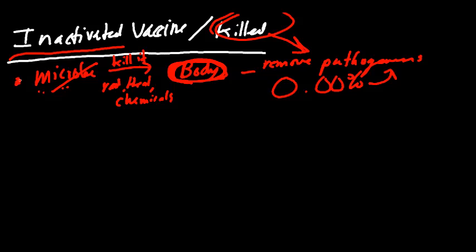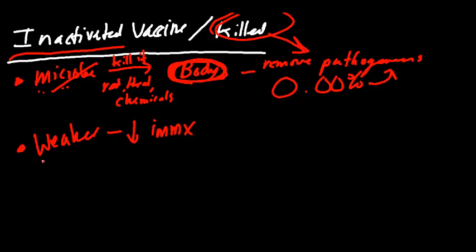So why wouldn't we give inactivated vaccines more often? It's because they're weaker — that's one of the disadvantages of an inactivated vaccine. They cause a decreased immune response compared to the live attenuated. Their weaker response doesn't stimulate the immune system as much. Live bugs stimulate the immune system really well because they mimic a pathologic strain. For the inactivated vaccines, we're just dealing with the corpse. Our immune system still recognizes this corpse; however, it doesn't form as good of a response because we're just dealing with the dead body of that bug.